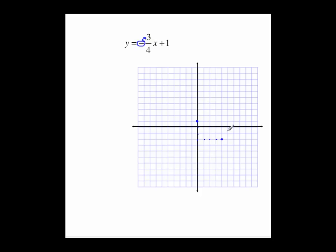We let the negative go with the top. So count it again. Down 1, 2, 3. Count to the right 1, 2, 3, 4. There's my 3 points. Those are enough for me to get a reasonable line. And that is the line y equals negative 3/4x plus 1.